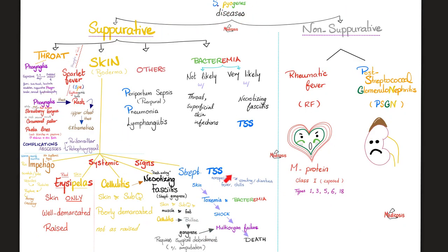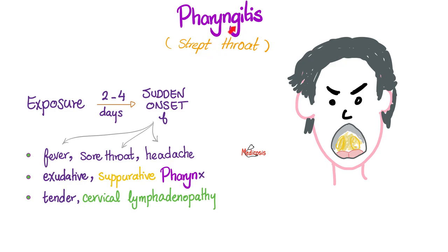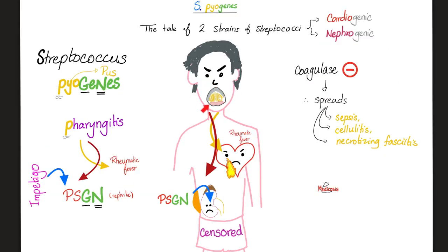Streptococcus pyogenes can lead to a huge number of diseases. Don't forget throat infections, skin infections, and the two disasters: rheumatic fever and post-streptococcal glomerulonephritis. After the throat infection, give it two to four days and you'll have sudden onset of fever, sore throat, headache, exudative suppurative pharyngitis with lots of pus, and tender cervical lymph nodes. If this throat infection is not treated properly, you're at high risk of two disasters — one affecting the heart (rheumatic fever) and one affecting the kidney (post-streptococcal glomerulonephritis). The strain causing throat infection is both cardiogenic and nephrogenic, while the strain causing skin infection is only nephrogenic.